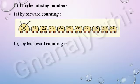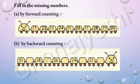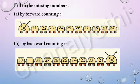Now, let us fill the missing numbers by backward counting: 21, 22, 23, 24, 25, 26, 27, 28, 29, 30. The missing numbers are 21, 23, 25, 27 and 29.